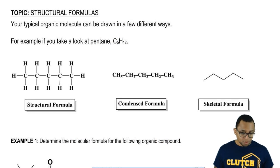If we take for example pentane, pentane's formula is C5H12. There are different ways we can draw it. The three major ways we can talk about it is our structural formula.